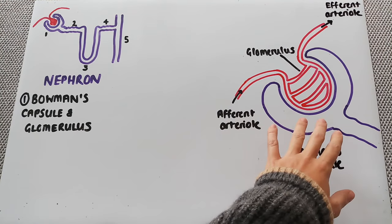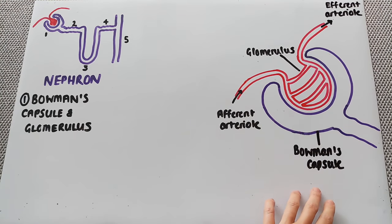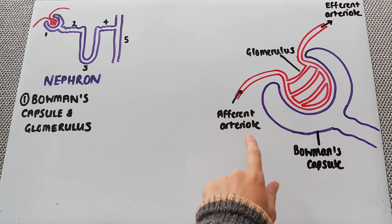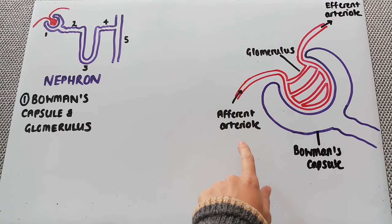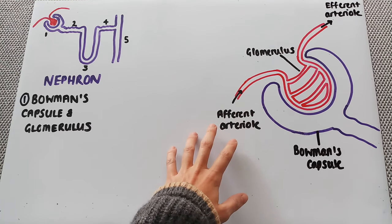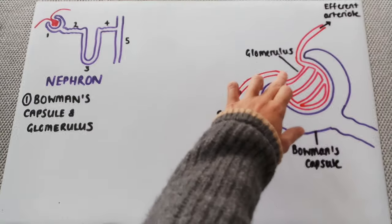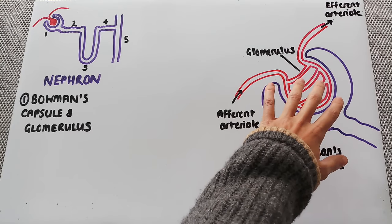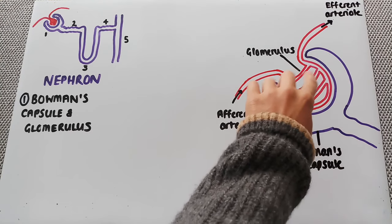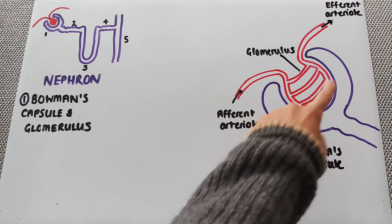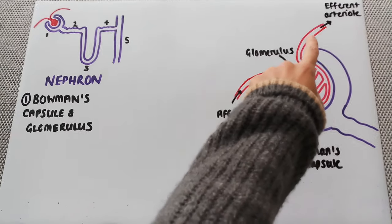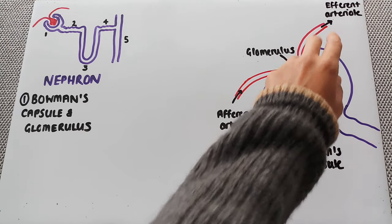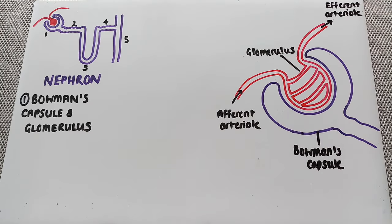We've got the purple section which is the Bowman's capsule of the nephron, and then our blood vessels — the afferent arteriole, 'A' meaning arriving, going in and forming a capillary network called the glomerulus, which is inside the Bowman's capsule. It then leaves out of the efferent arteriole, 'E' meaning exiting.